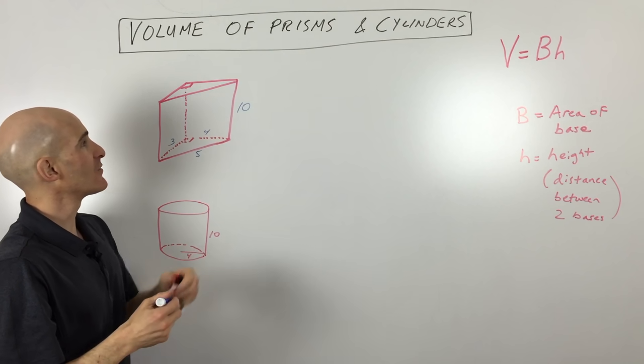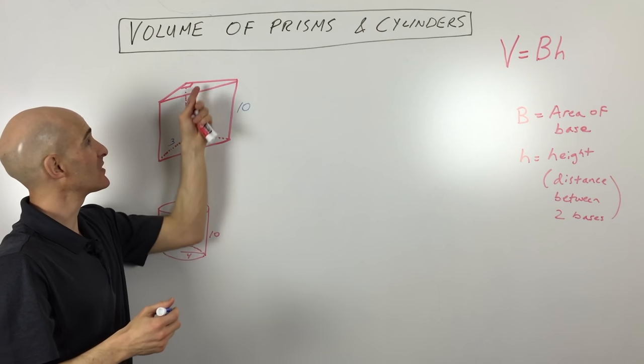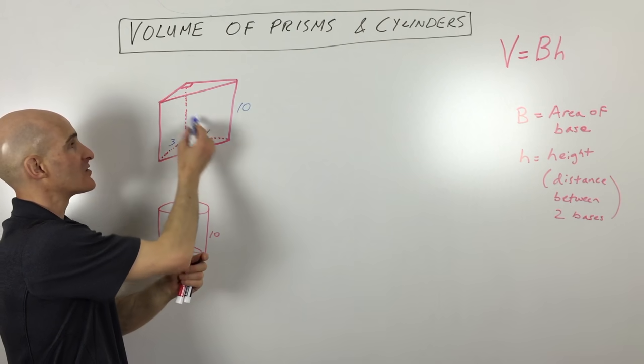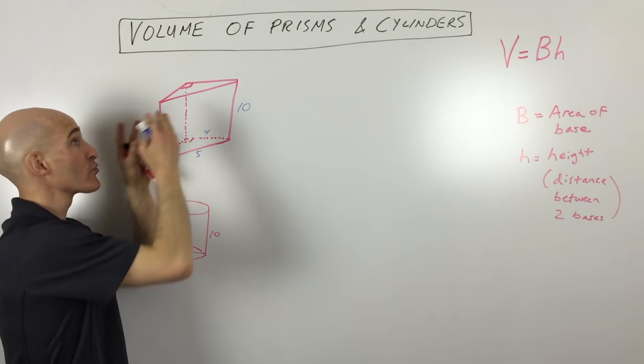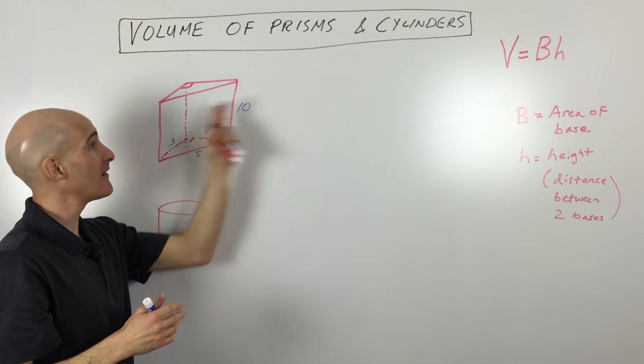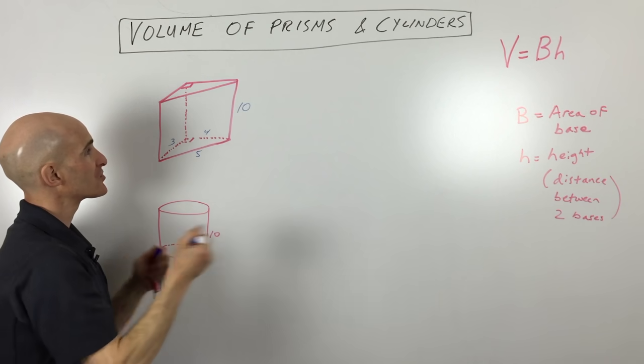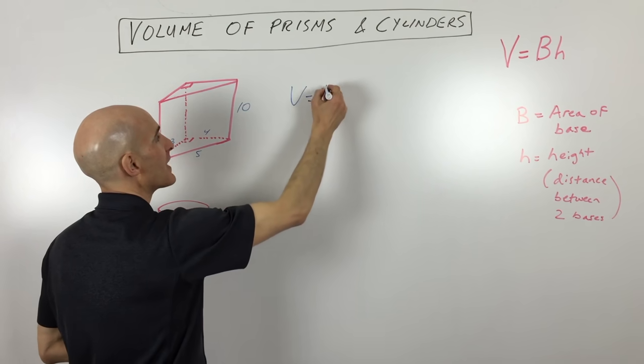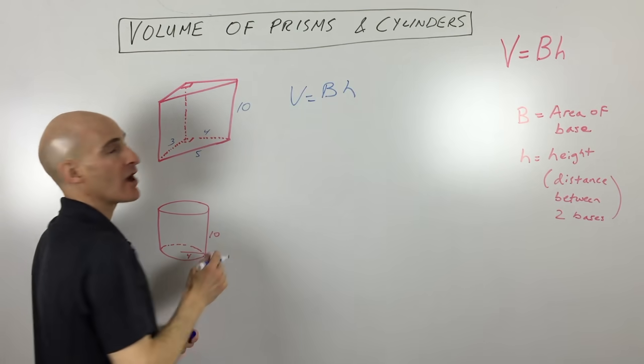Let's look at this example. If we find the volume of this triangular prism - notice the dashes here just mean we're looking through the object to the other side so we can get that sense of 3D on a flat surface. Let's go and find the volume. It's the area of the base times the height.